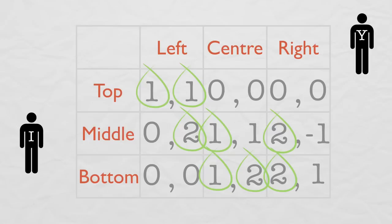There are the best responses, and you can see that there are two Nash Equilibria, one at top left and one at bottom center.